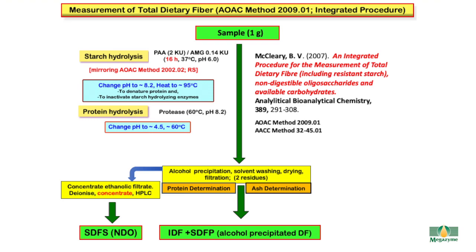In an attempt to develop a method for measurement of total dietary fibre, we developed what we call the Integrated Total Dietary Fibre Procedure, which subsequently became AOAC Method 2009.01. In this method, the sample is incubated under physiological conditions with pancreatic alpha-amylase and amyloglucosidase to obtain an accurate measurement of resistant starch. The material is then pH-adjusted, treated with protease to hydrolyse the protein to peptides, and then alcohol is added to precipitate the soluble high-molecular-weight dietary fibre. This, together with the insoluble dietary fibre, is recovered by filtration, washed and dried to give two residues — one analysed for ash and the other for residual protein — and these values are subtracted from the residue weight to give a value for high-molecular-weight dietary fibre, i.e., insoluble dietary fibre and soluble dietary fibre that precipitated in 78% ethanol.